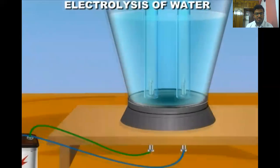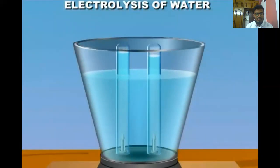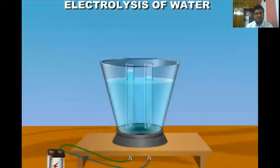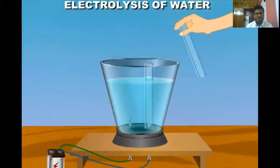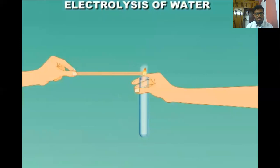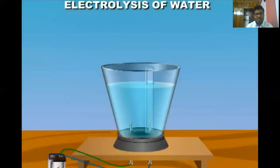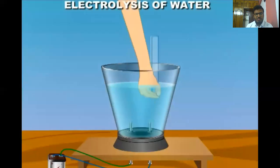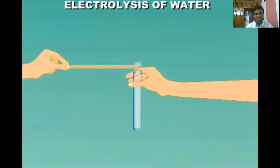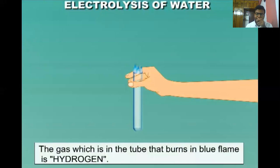Connect the outer electrodes to the positive and negative terminals of a battery. You can see gases are produced in the two test tubes. After 30 minutes, examine the volume of each gas formed — the volumes are not equal. Introduce a glowing splinter into the test tube with less gas; the splinter burns brilliantly, so this gas is oxygen.